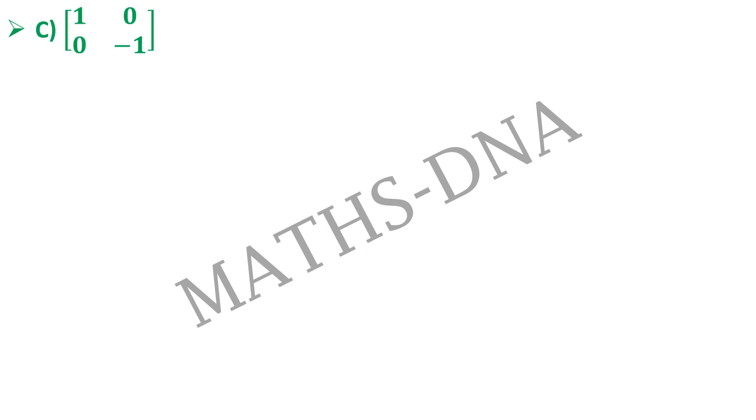Option C. 1 0 0 minus 1. Once again rank is 2. Eigenvalues are plus minus 1 that is 1 positive and 1 negative. So the signature is P minus N and that is 1 minus 1 that is equals to 0. So option C is correct.